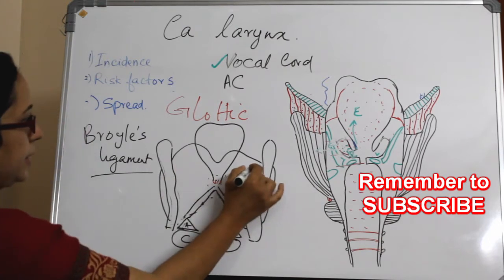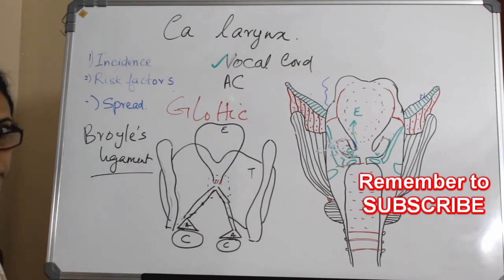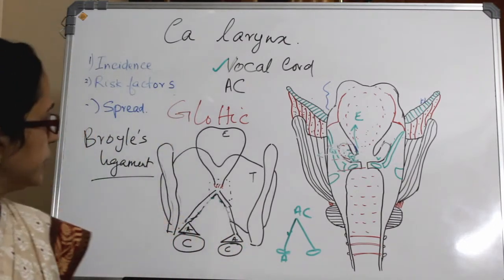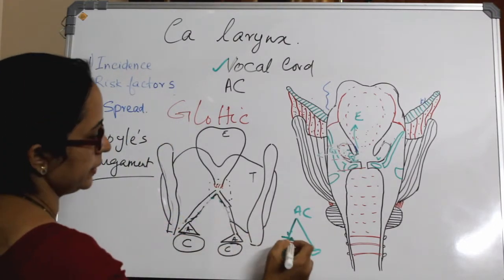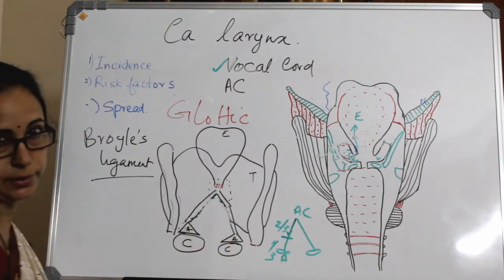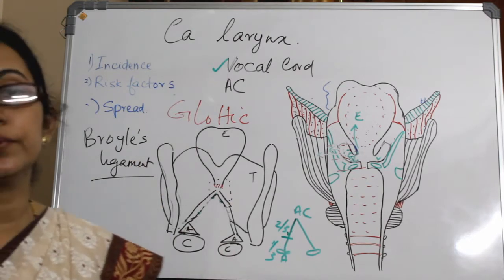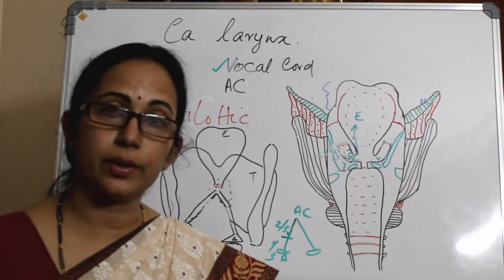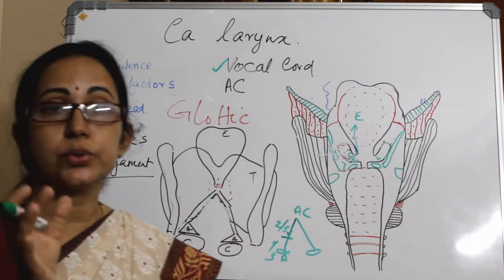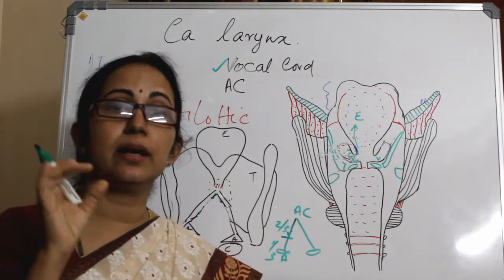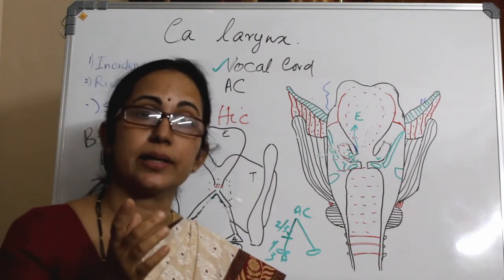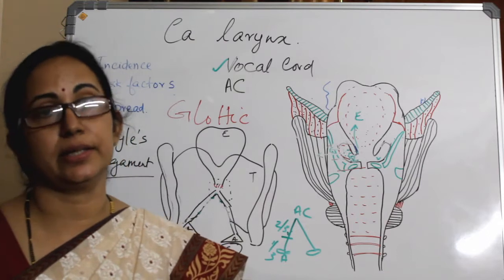This is the thyroid and this is the epiglottis. Of the vocal cord, we can divide it again into anterior two-thirds and posterior one-third. Most of the glottic tumors occur in the free border of the anterior two-thirds vocal cord. And the initial local spread is in a horizontal direction rather than in a vertical direction.